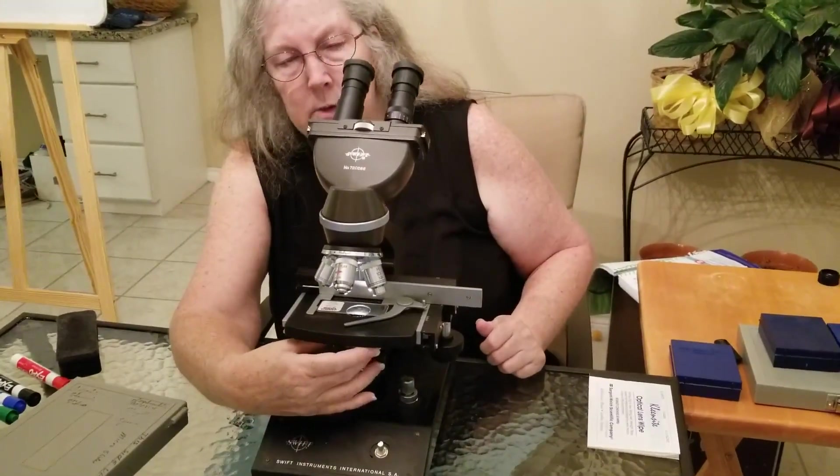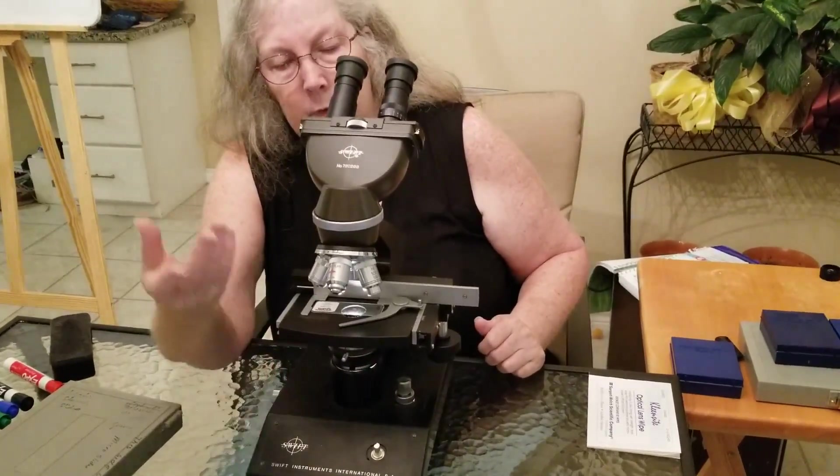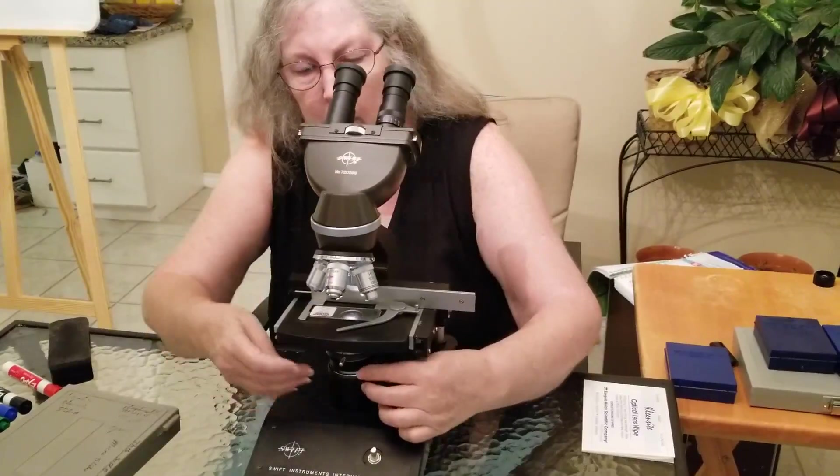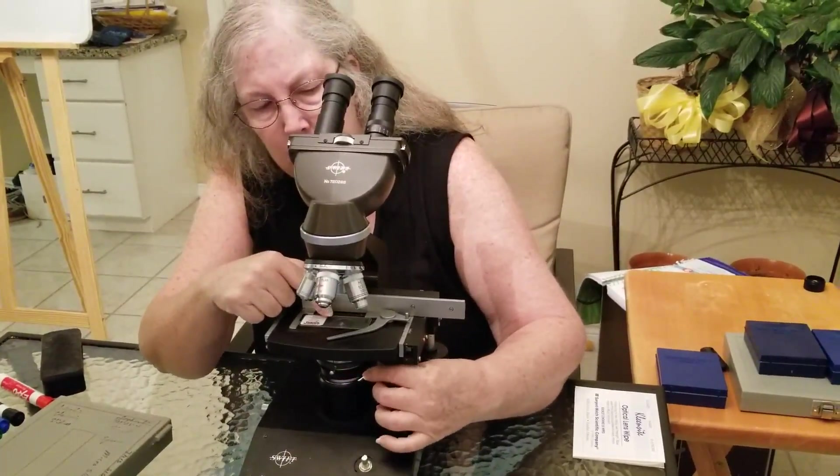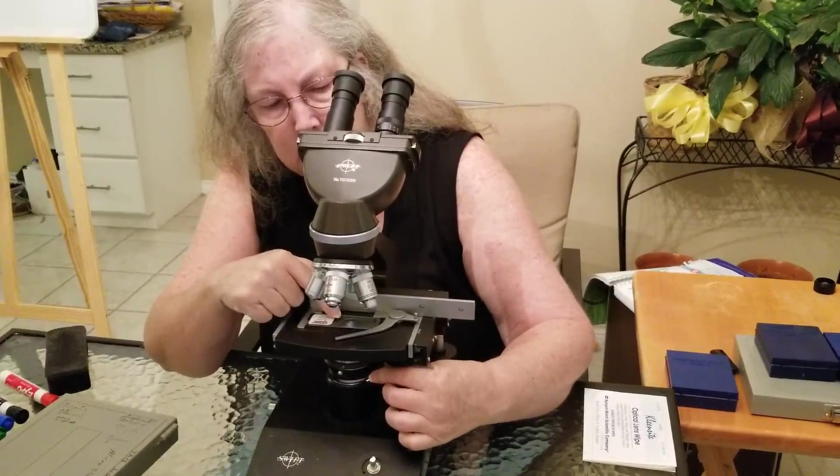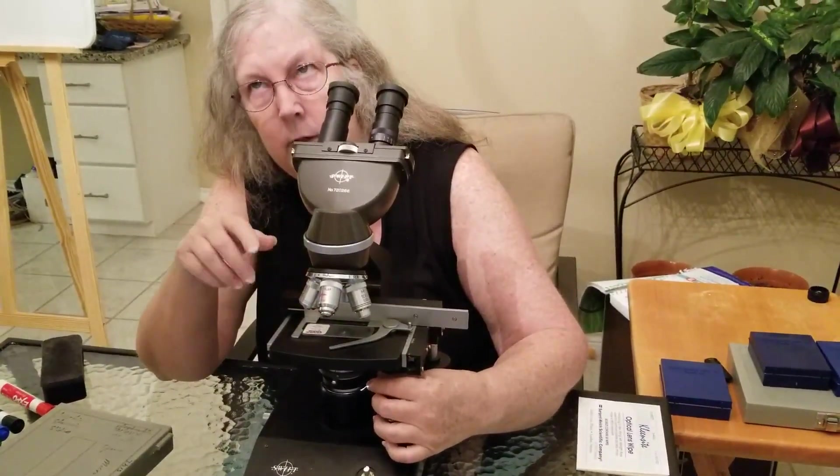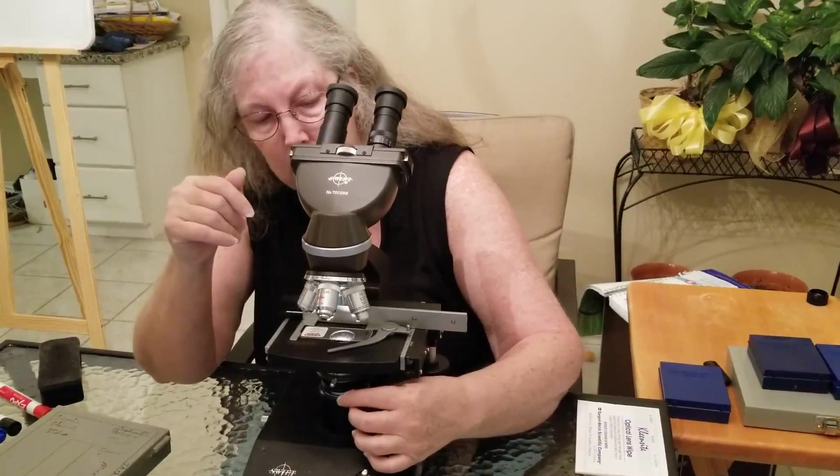Under here you also have your condenser that's going to help focus the light up and then there are some knobs here. That's the iris. I don't know if you can tell it's going to adjust the amount of light also that's coming up. Kind of like a shutter if you're into photography.